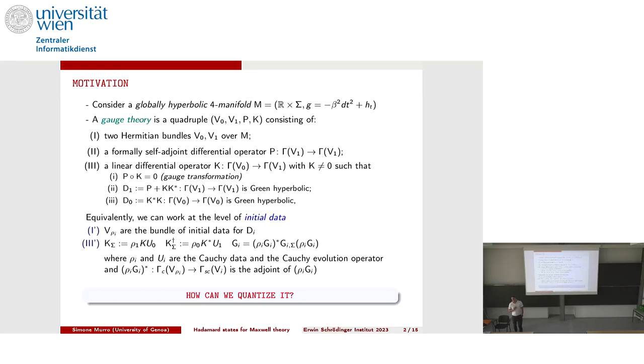A gauge theory can be seen, according to Ack and Schenkel, as a quadruple, where the first two data are just Hermitian bundles — real or complex vector bundles of finite rank over the manifold M — determining which kind of fields you would like to study. The dynamics is understood as the kernel of a differential operator P acting on sections of V1, assumed to be formally self-adjoint. We will not ask it to be hyperbolic, so the Cauchy problem might not be well posed.